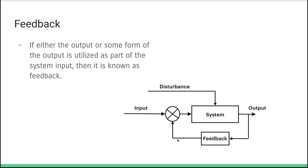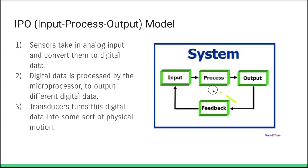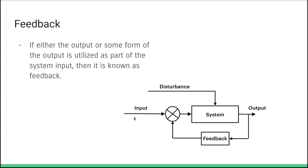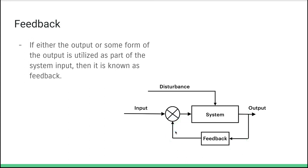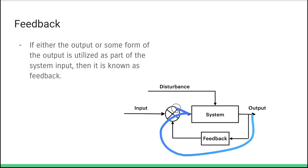Let's talk about feedback. Looking at our input-process-output model: we send an initial digital signal to the system, the processor processes that signal, and there is some output. Based on the output and potentially other environmental factors, we send a signal back to our processor telling it what to do — basically that we're sending the signal back, and now it needs to generate more output. We repeat that process until we've achieved an optimal result.